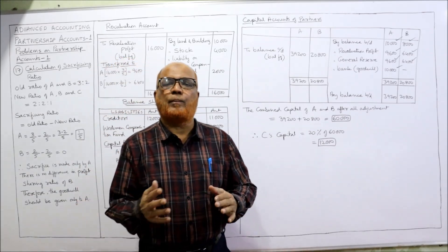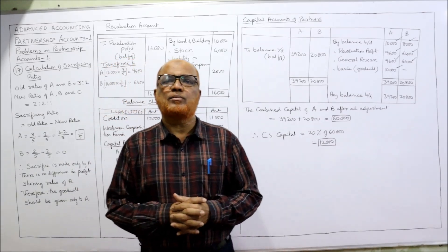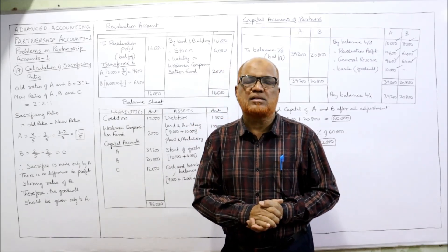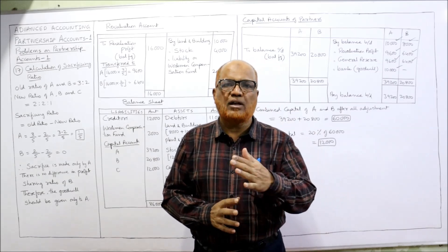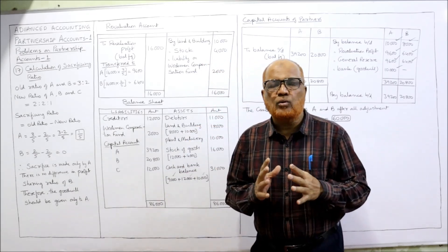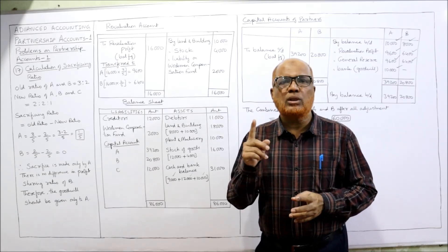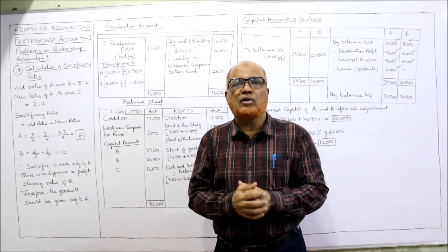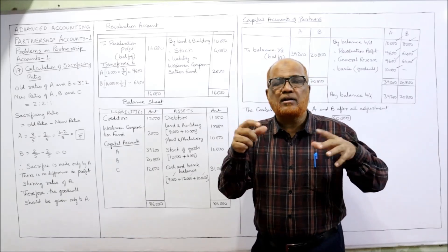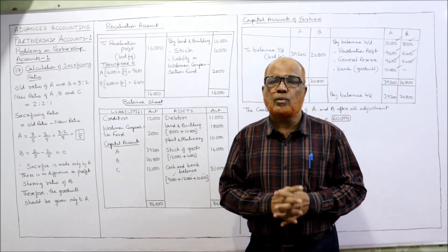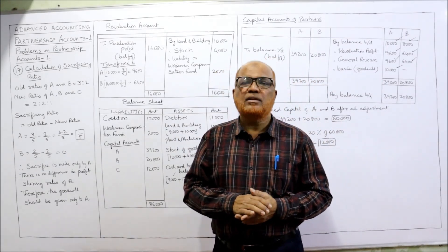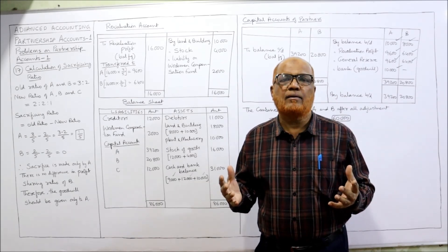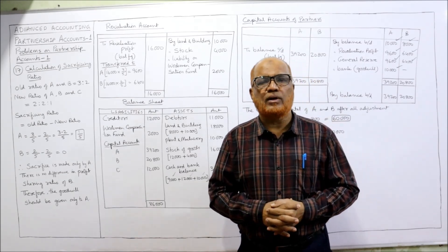So far we have covered 17 problems on admission of a new partner, plus problems on preparing capital and current accounts, calculating profit sharing ratios. For perfect command on this subject, watch all videos from beginning to end — don't skip, because the topics are completely linked. In the next video, we will start the next topic on retirement of a partner — what adjustments are to be made when a partner retires.